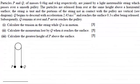Hi, now in this question we're told that we've got particles P and Q of masses 0.4 kg and m kg respectively, and they're joined by a light inextensible string which passes over a smooth pulley and the particles are released from rest at the same height above a horizontal surface.